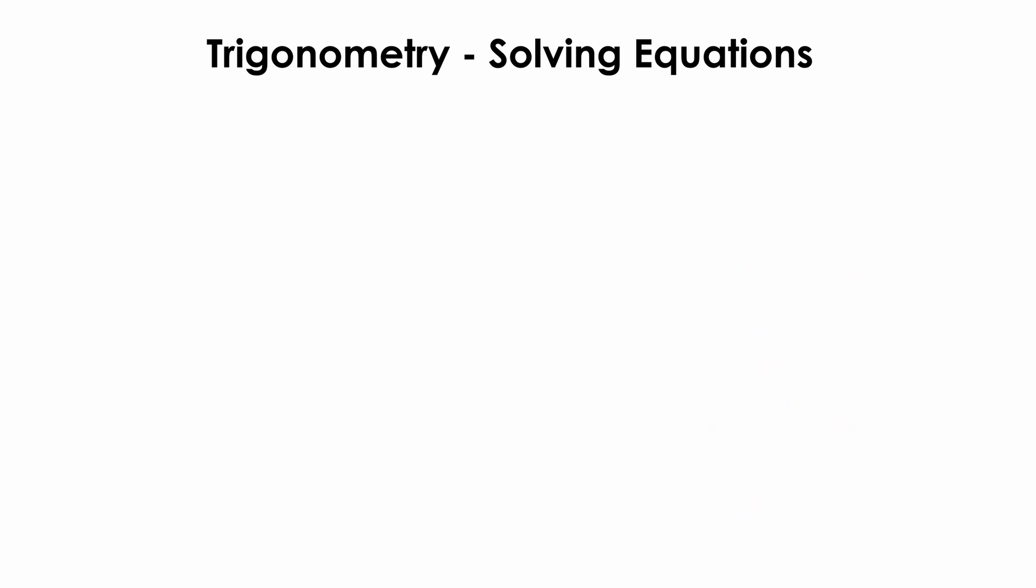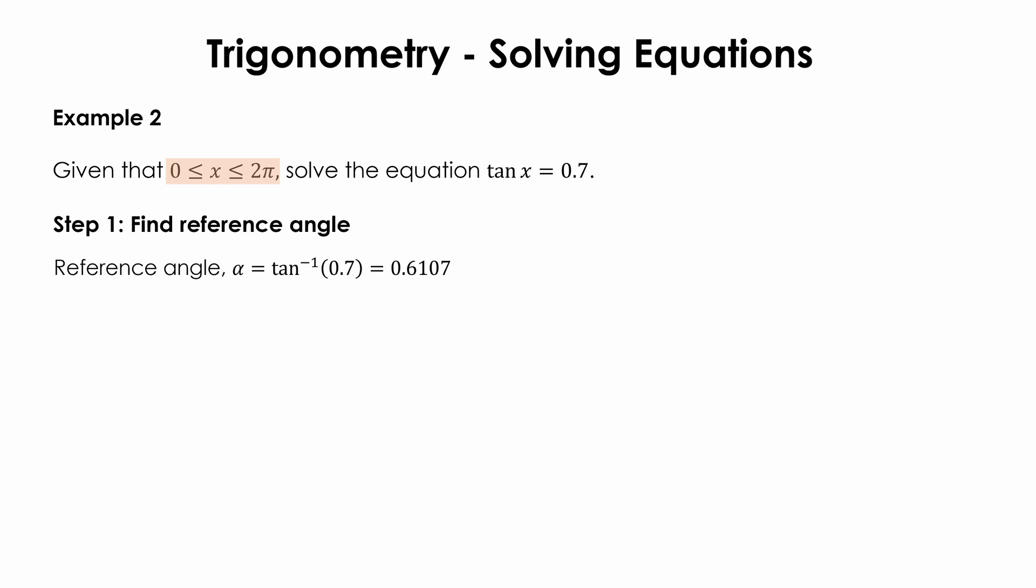Let us look at another example. Given that x lies between 0 and 2π inclusive, solve the equation tangent x equals 0.7. The first step is to find the reference angle. In the question, it is given that x lies between 0 to 2π. Notice that the angles are not given in degrees but in radians. Remember to change the calculator to radian mode. The reference angle equals inverse tangent of 0.7, which is 0.6107.